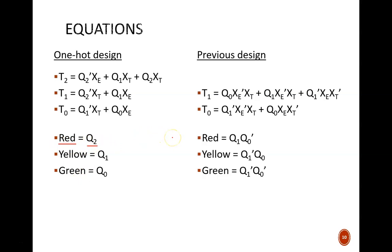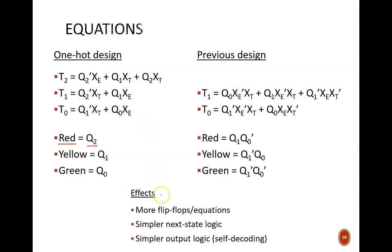Let's compare the design equations from this one-hot design and our previous design. We have one more flip-flop instruction equation, but all of the equations are simpler. This takes us back to the three effects mentioned at the start of this video. Using one-hot encoding for state memory causes more flip-flops and associated equations. It generally makes those next state equations simpler, which leads to improvements in propagation delays and fan-out. And it makes for simpler output logic. So simple, in fact, that the flip-flop outputs feed directly as the output signals.